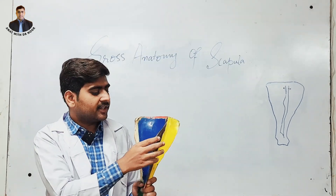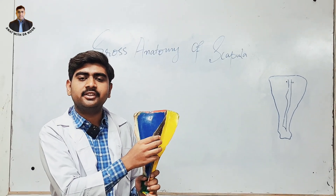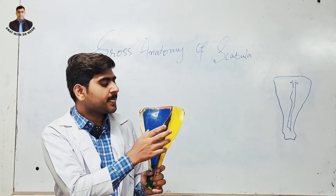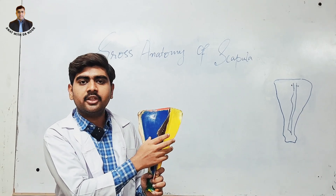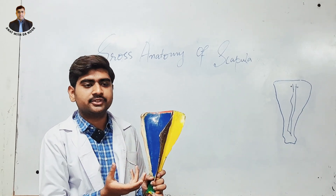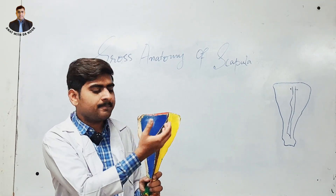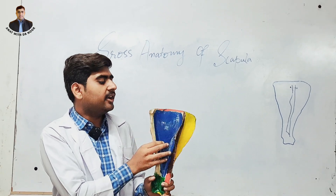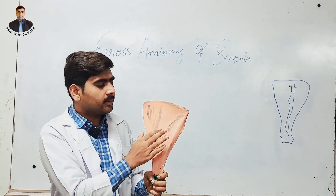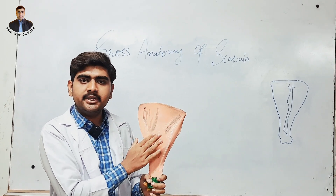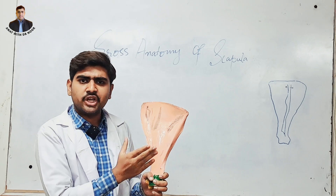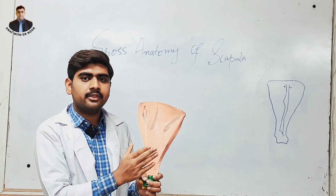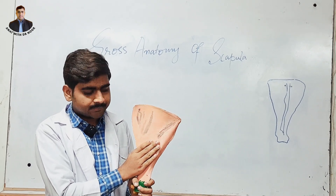The lateral surface is divided by the scapular spine. It divides the lateral surface into unequal fossae — that is the supraspinous fossa and the infraspinous fossa. On the medial surface, there is also a shallow fossa known as the subscapular fossa.